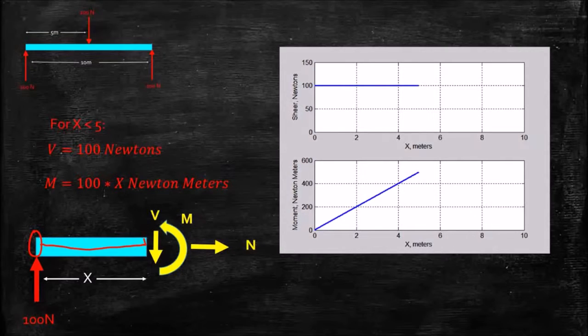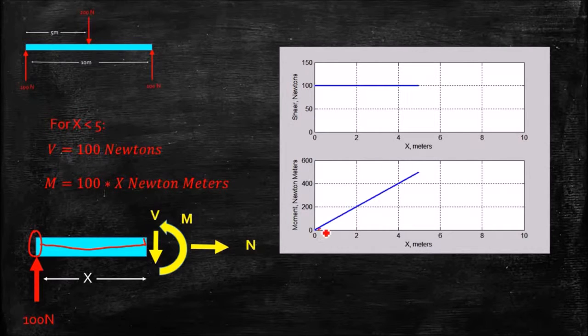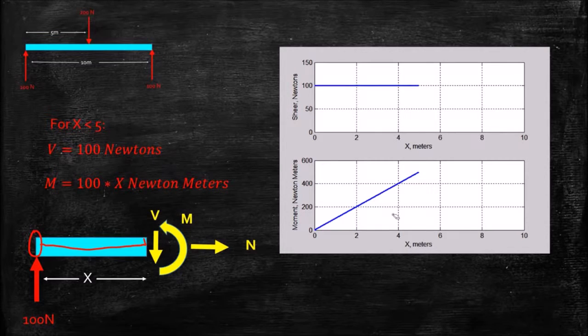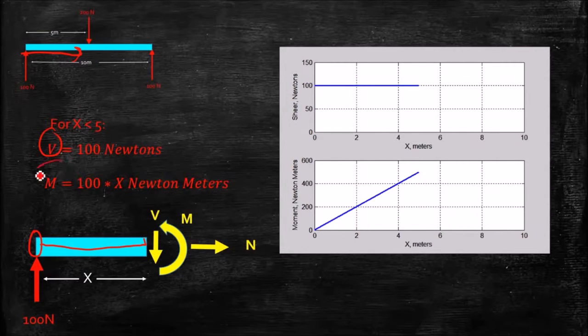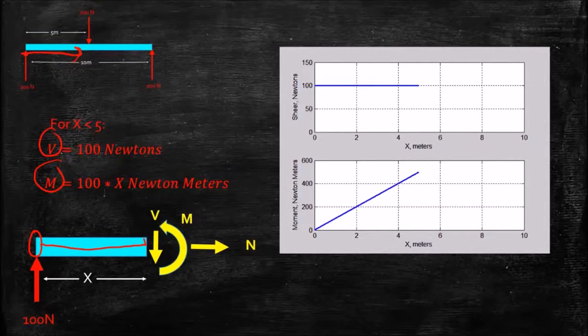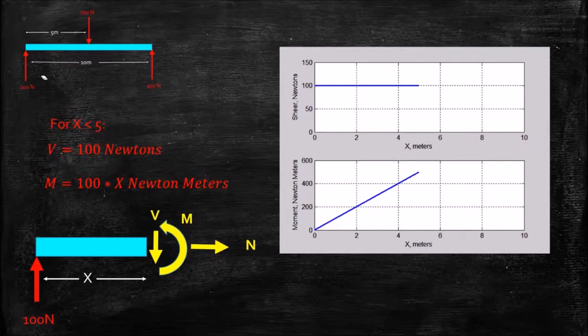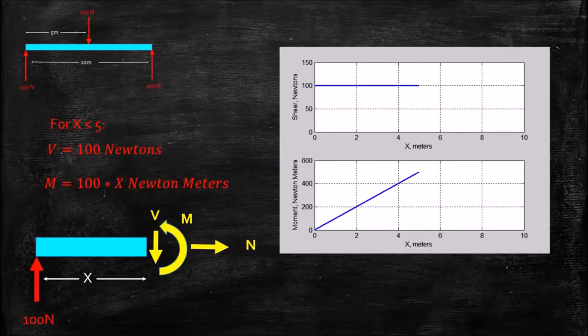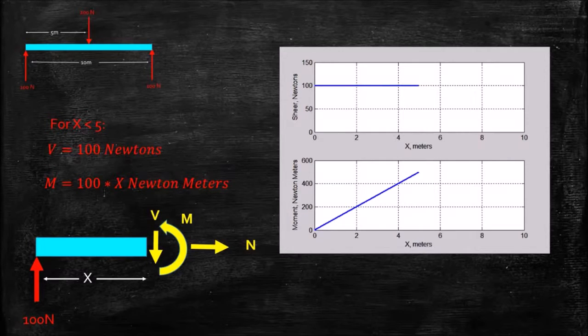And our shear force is a constant positive value, and we look at the moment, and this moment has a constant positive slope. And as it turns out, we can find the shear force by integrating the load across that section, we can find the moment by integrating the shear force. But we'll do that in another video, but I'll just mention that for now as a way to kind of look at things and say, does this make sense? That constant positive shear force results in a constant positive slope on the moment.